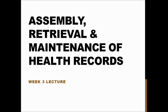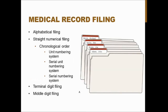That covers security. Now we shift to week three, which is about the assembly, retrieval, and maintenance of health records — starting with paper records and moving into electronic health records and information systems. For medical record filing, there are many different techniques for filing paper records. You'll often see alphabetical filing by the patient's last name, straight numerical filing in chronological order with three subtypes (unit, serial unit, and serial numbering), as well as terminal digit filing and middle digit filing.